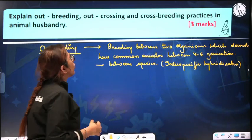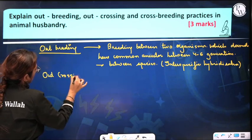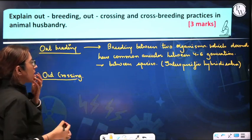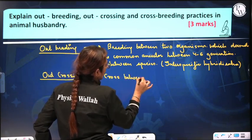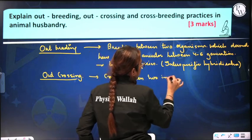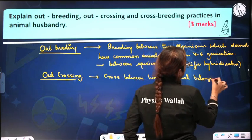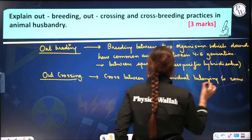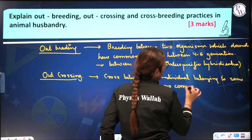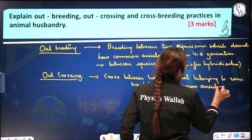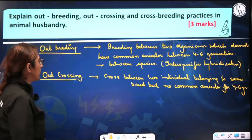Outcrossing is a cross between two individuals belonging to the same breed but with no common ancestor for four to six generations. This is the key difference between outbreeding and outcrossing: outbreeding can be between different species, while outcrossing is within the same breed.